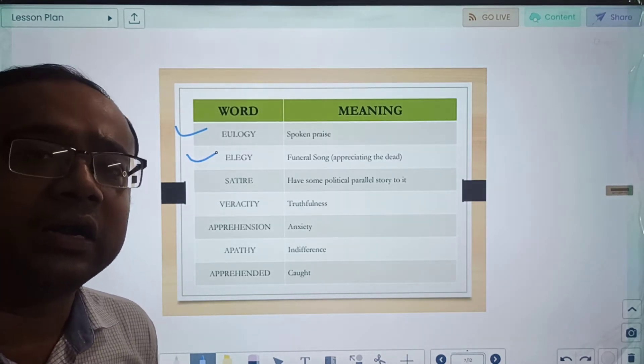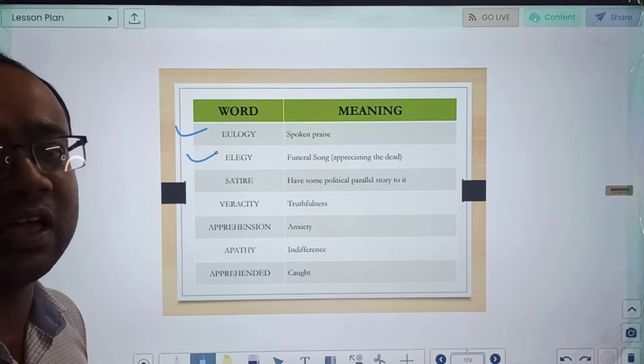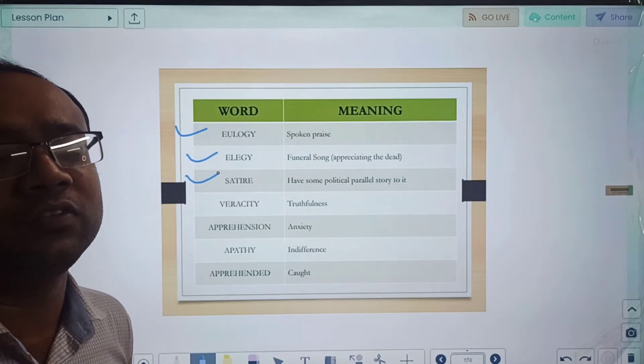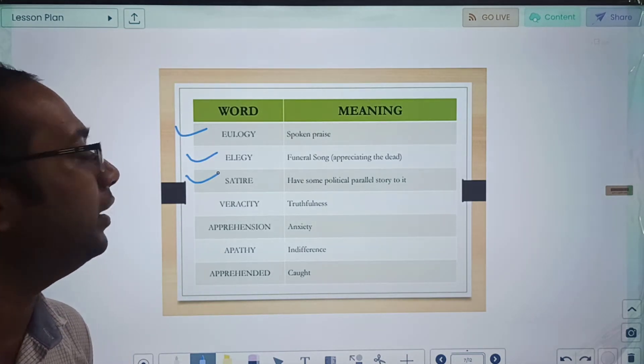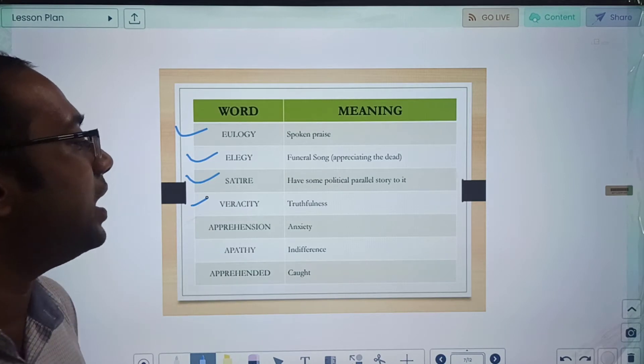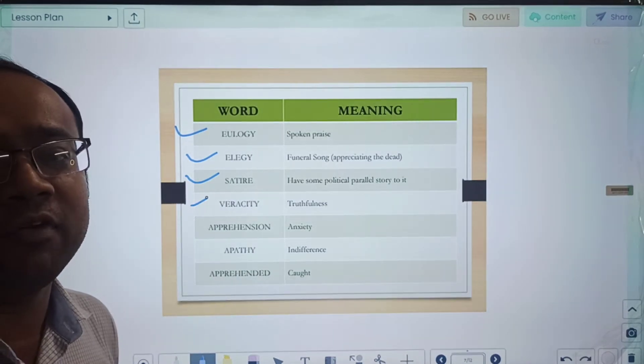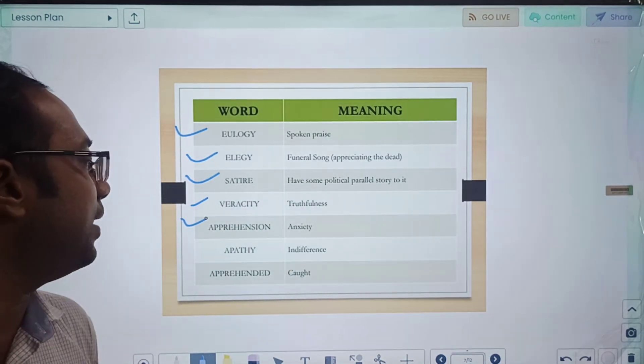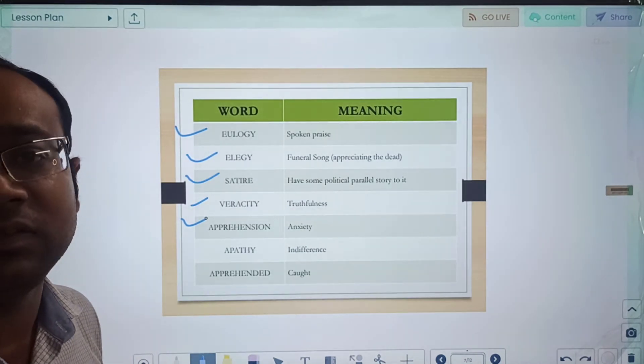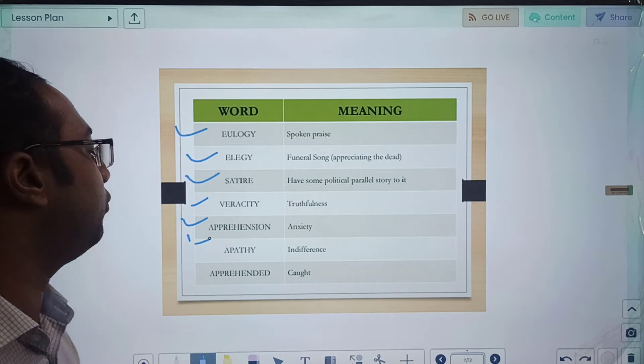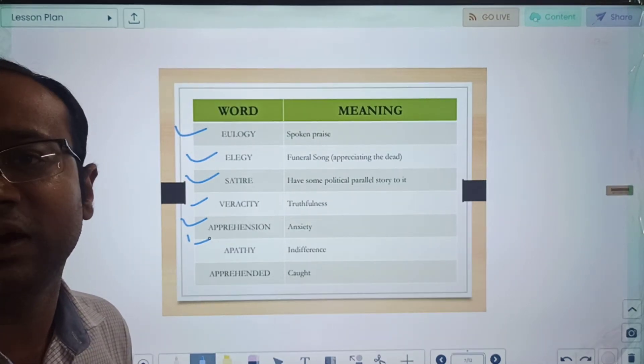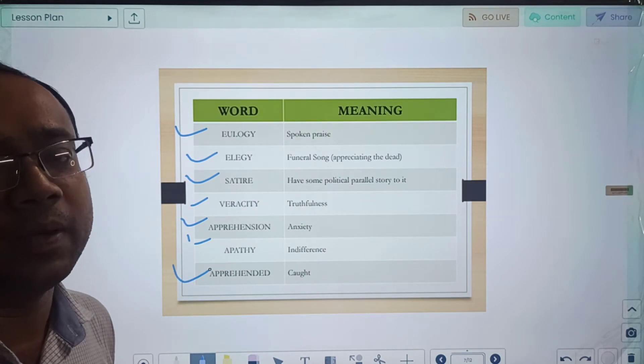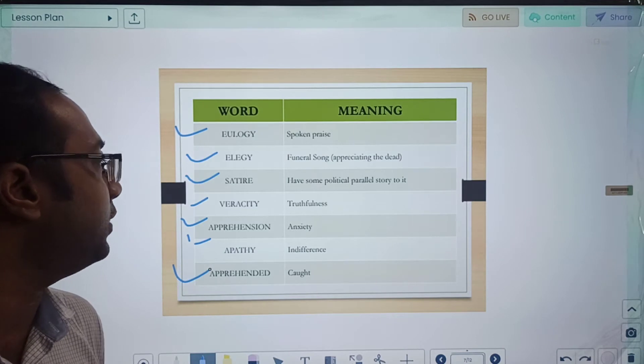Satire is a very common word. We say satirical expression or today's article in the newspaper is very satirical. Satire means having some political parallel story to it. Instead of giving the exact meaning, you are basically referring to that parallel story. Veracity means truthfulness. Apprehension means anxiety. Apathy means indifference, it does not make any difference to you whatever is happening. Apprehended means caught.